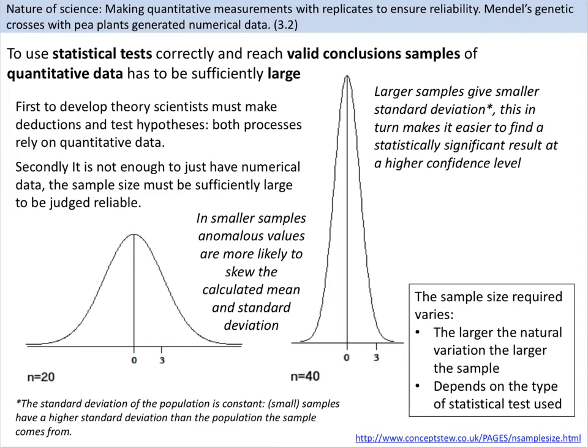When designing your experiments for IAs, collect as much data as possible for each individual group so that statistically you can be very sure your results are sound. Remember the five by five rule: you need five variants of your independent variable, and five trials for each of those variants, so you have enough data to do a statistical test.